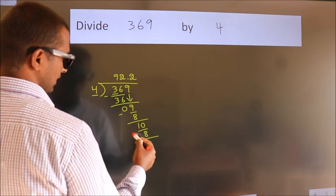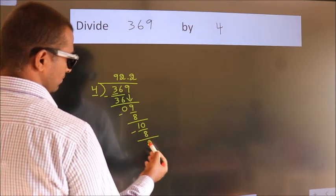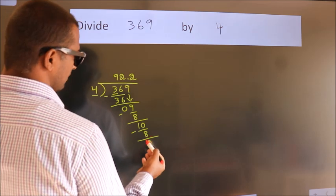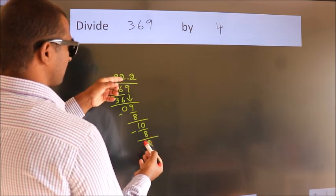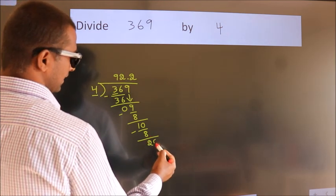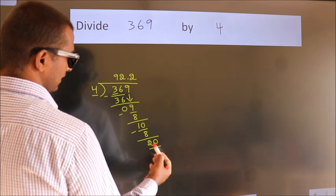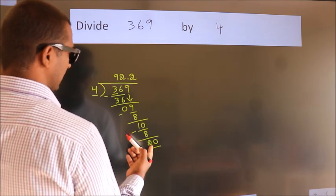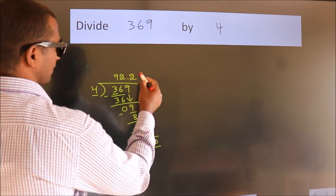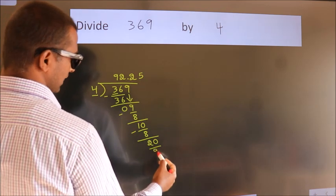Now we subtract, we get 2. After this, we already have the decimal. So directly take 0. So 20. When do we get 20? In the 4 table, 4 fives, 20.